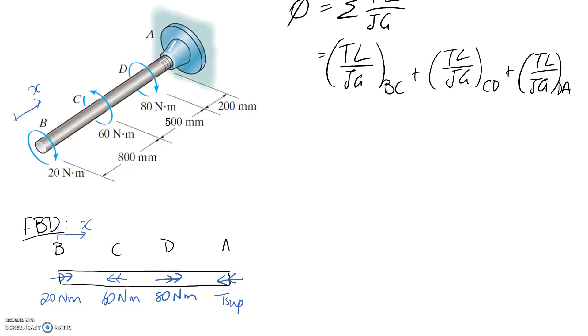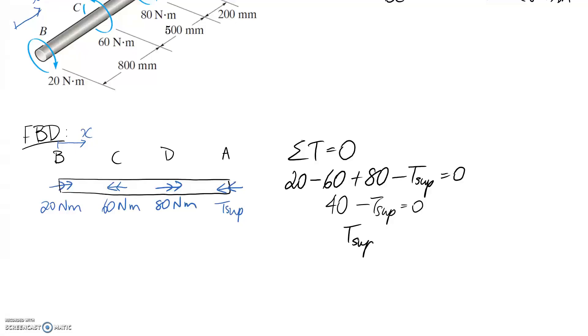We should be able to figure out this support reaction because we know it's in equilibrium, not spinning. The sum of the torques has to equal zero for it to not move. Applying it to our diagram, we get 20 in the positive direction minus 60 plus 80 minus T_sup equals zero. If we simplify these numbers, it's negative 40 plus 80, so 40 overall. That means our support torque is 40. It comes out positive, which means the direction was correctly drawn. If it had come out negative, it would have been the other way around.